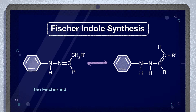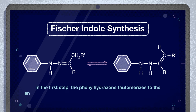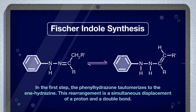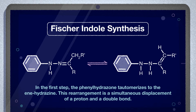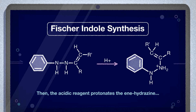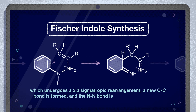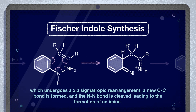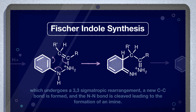The Fischer-Indole mechanism proposed by G.M. Robinson and R. Robinson can be described in a few steps. In the first step, the phenylhydrazone tautomerizes to the enhydrazine. This rearrangement is a simultaneous displacement of a proton and a double bond. Then, the acidic reagent protonates the enhydrazine, which undergoes a 3,3-sigmatropic rearrangement. A new carbon-carbon bond is formed and the nitrogen-nitrogen bond is cleaved, leading to the formation of an imine.